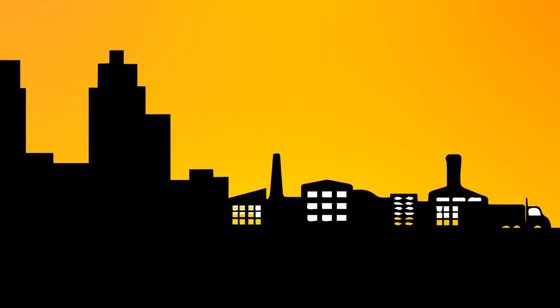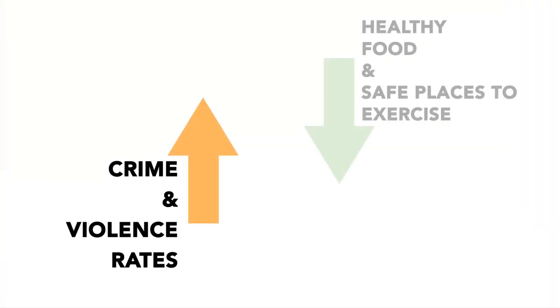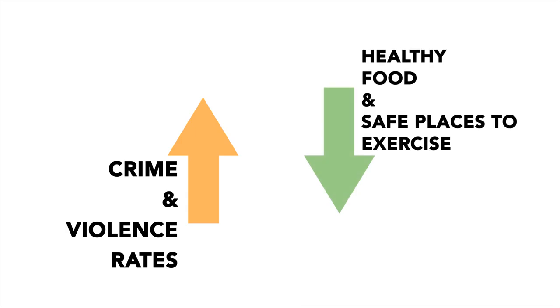Why? Lower income neighborhoods tend to be in poor social and environmental conditions. Examples include being closer to environmental hazards such as freeways or power plants, having higher crime or violence rates, or limited access to healthy foods and safe places to exercise.